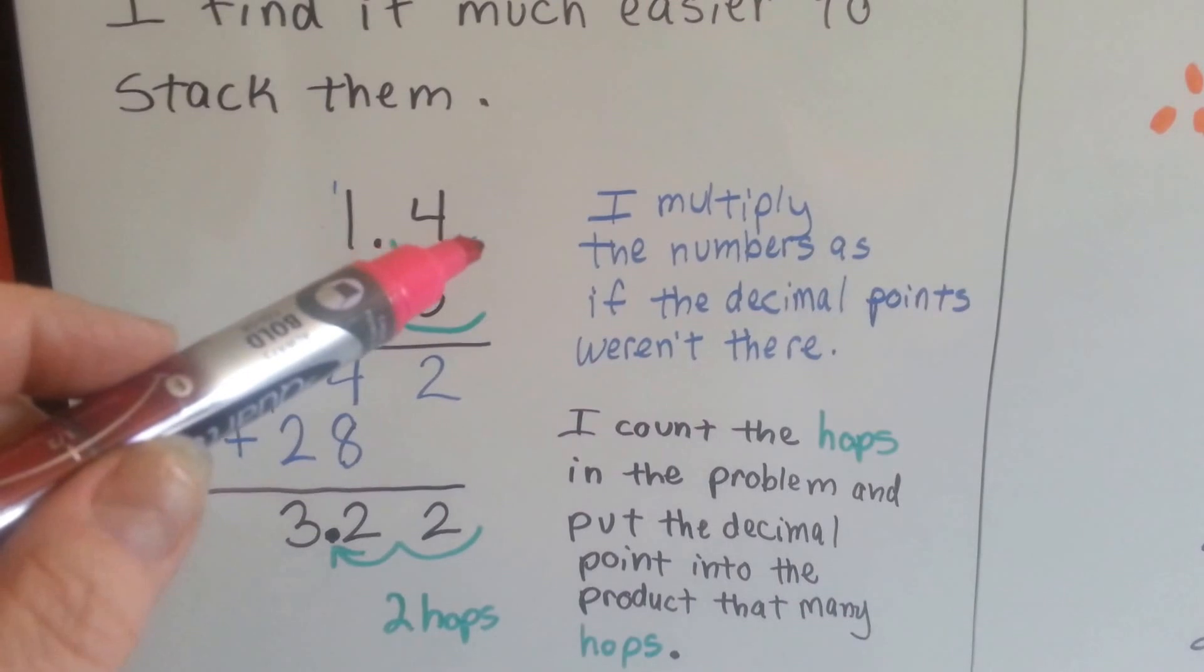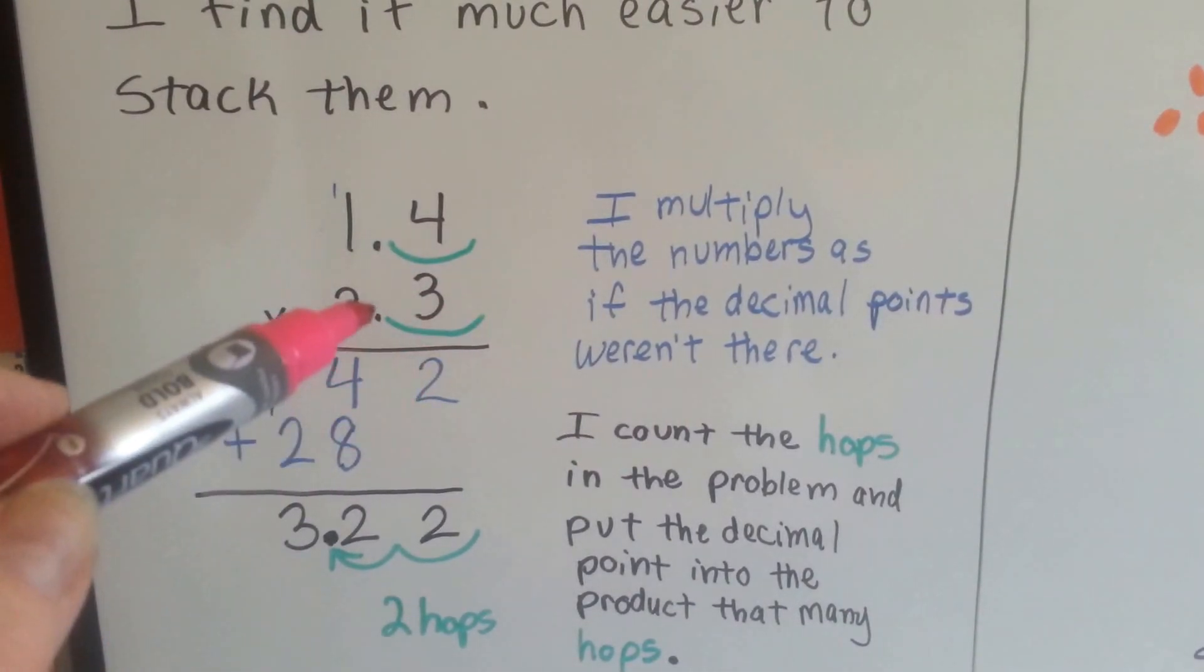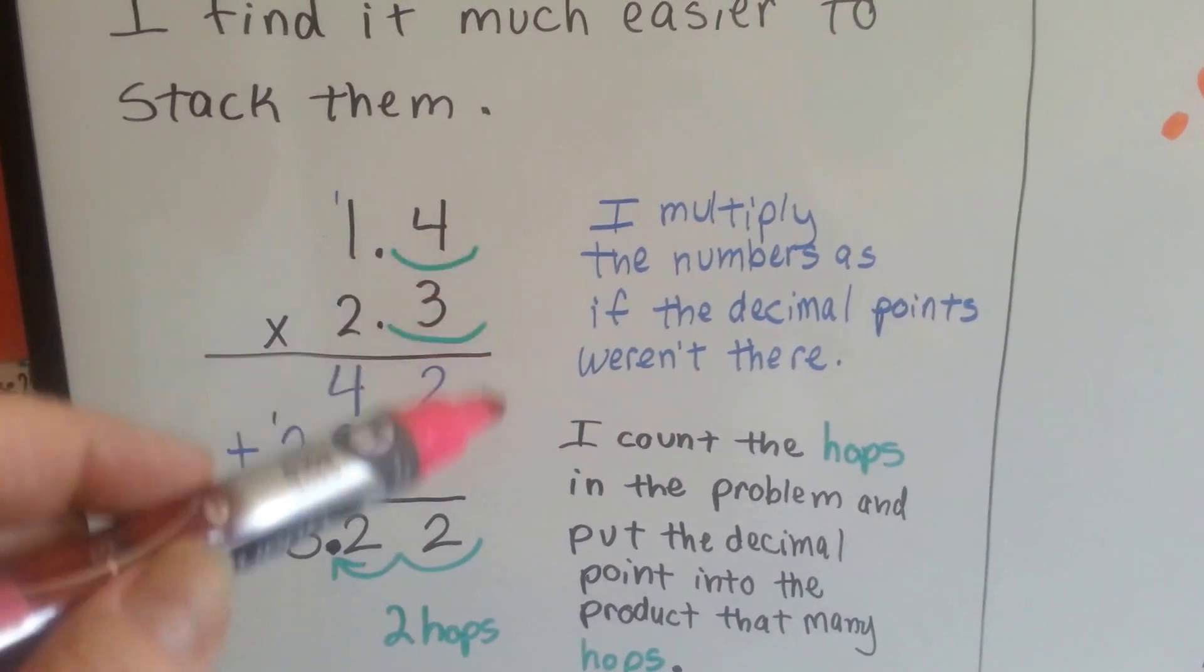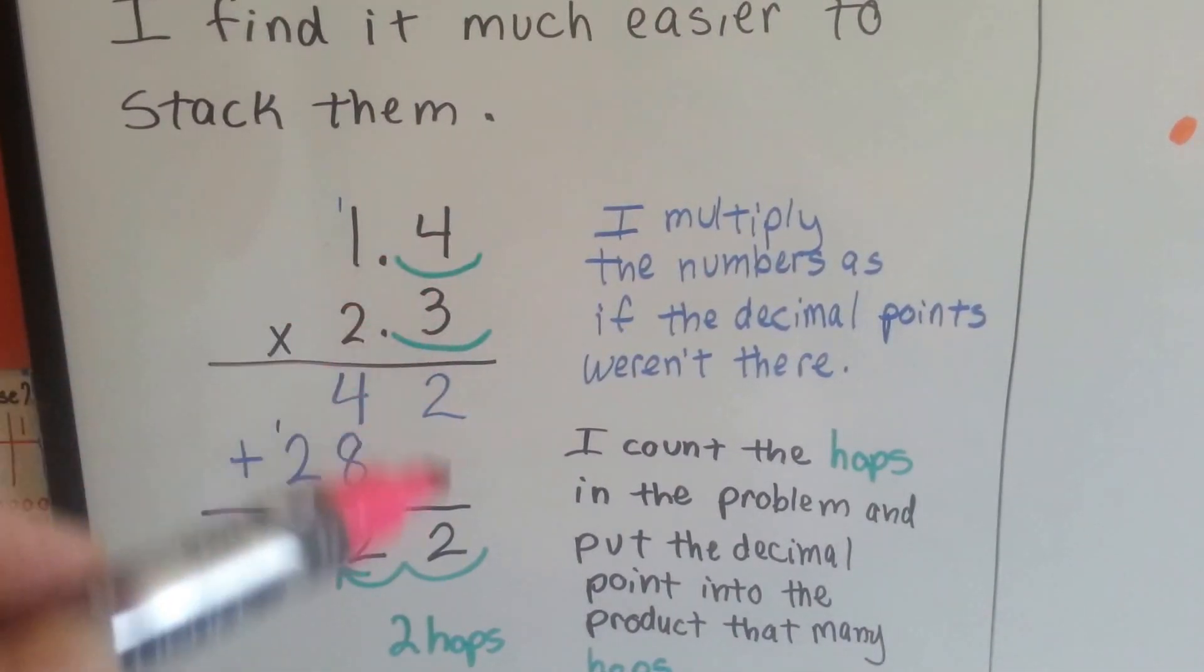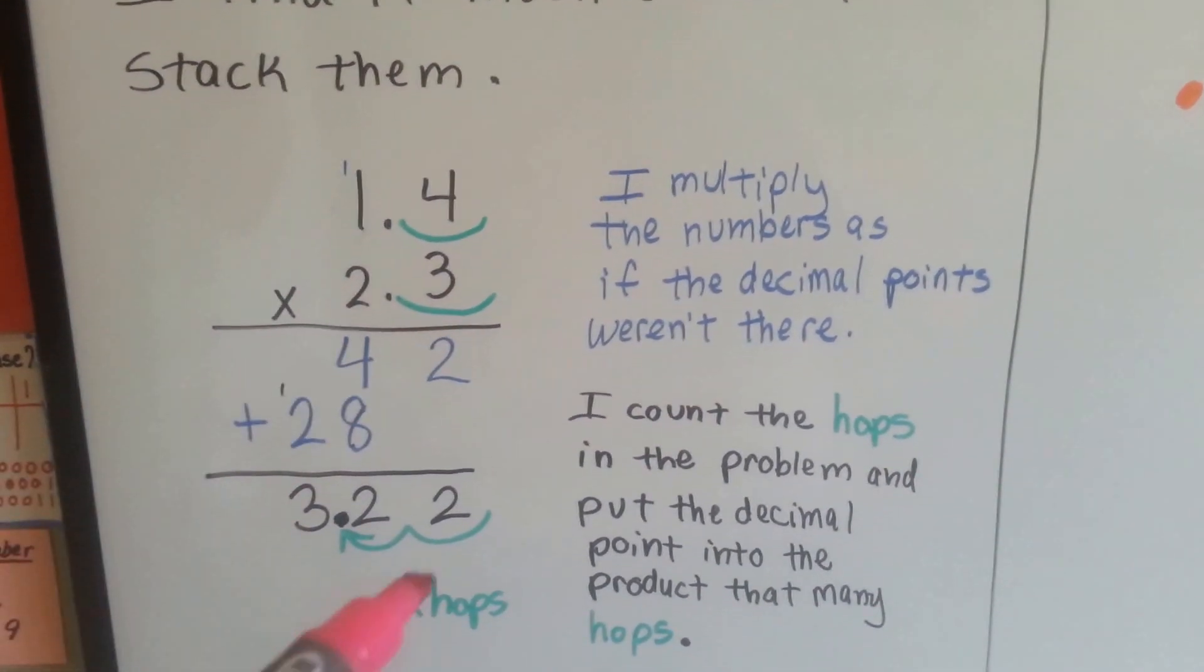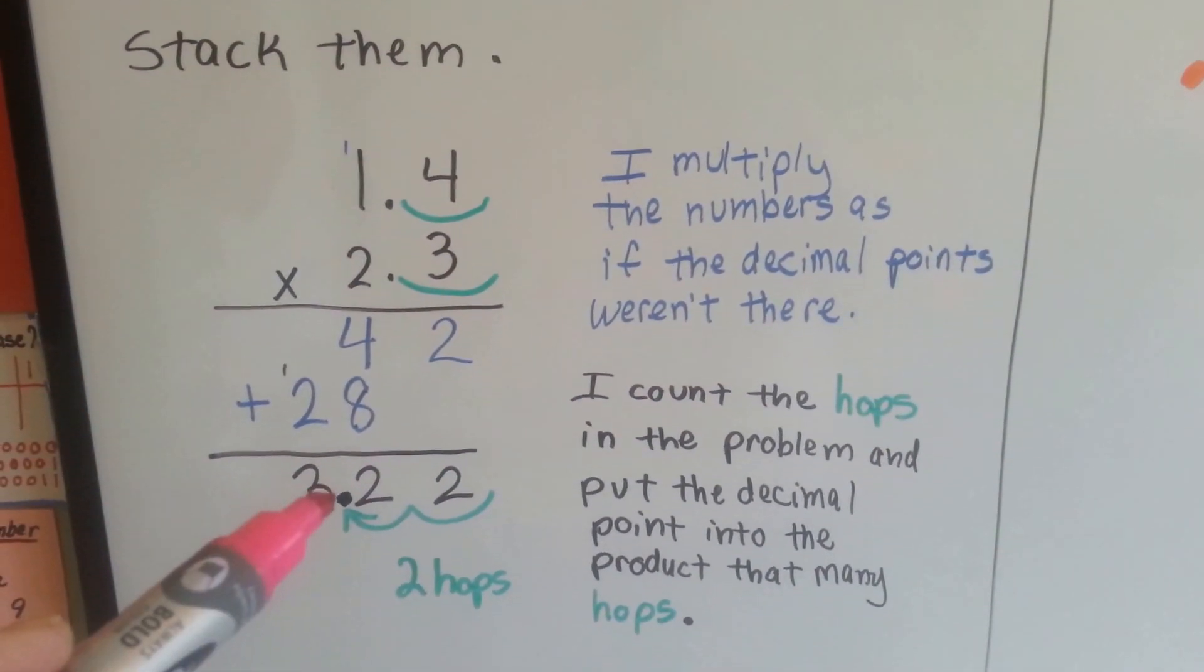Then, when we're finished, we count the hops over from this side of the ones place, or the tenths, or whatever, from this side. We count the hops over, and however many hops we make to the decimal points is how many hops over it is in the answer.